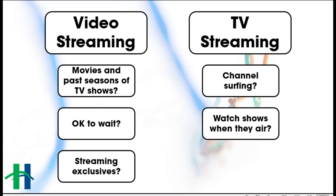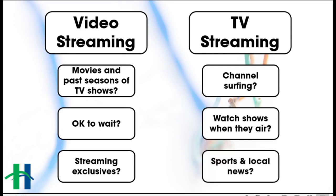If you're interested in streaming exclusives — things that only exist on Netflix or Hulu or any of those other options — you're going to have to go with the video streaming service. They don't air on NBC or any of the cable networks; it's only on Netflix. On the other hand, if you like live sports and local news, that will often force you in the direction of TV streaming. There are a couple of options we'll talk about at the end that will give you access to more local content or sports content.